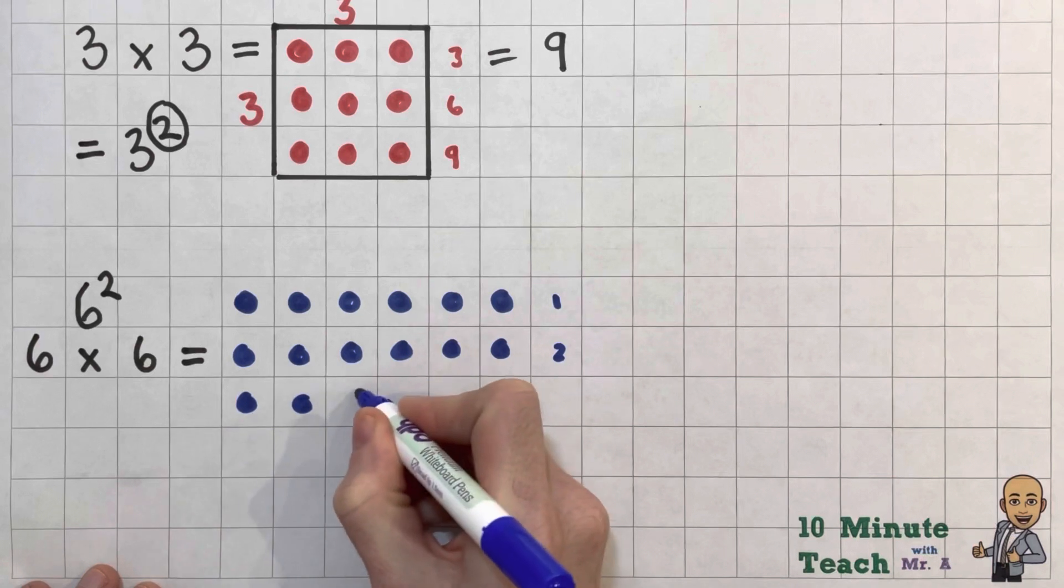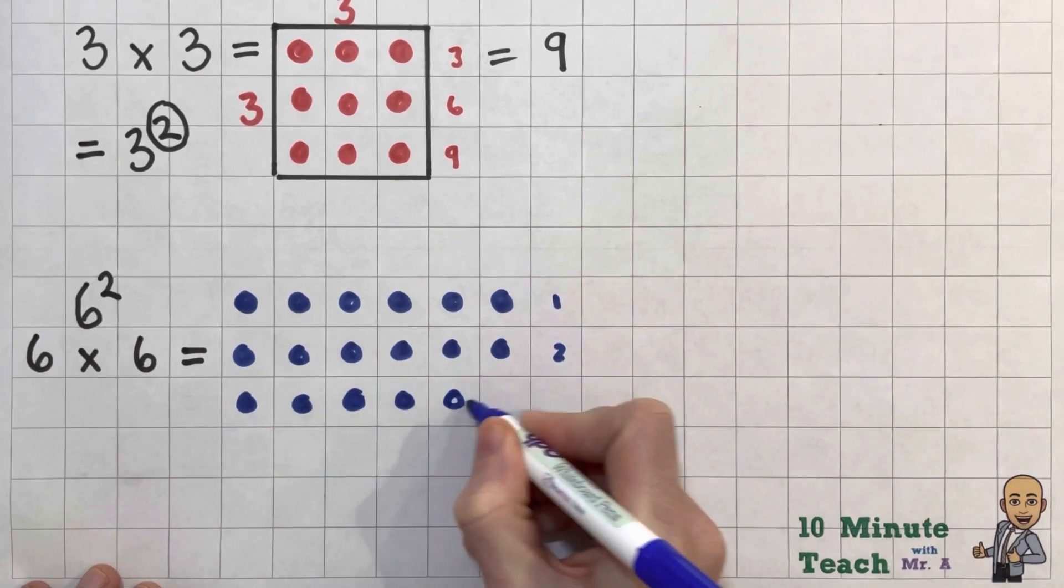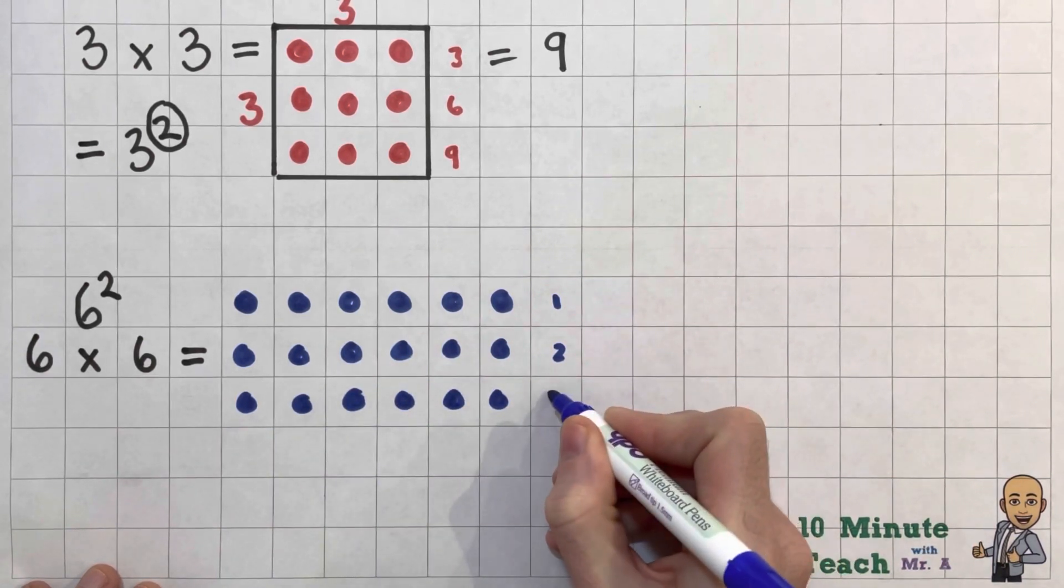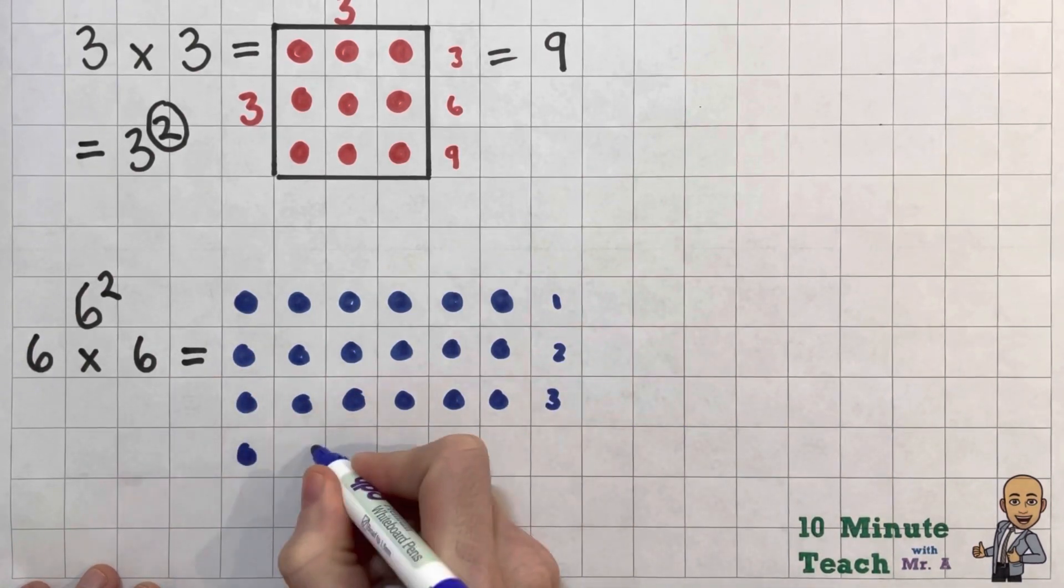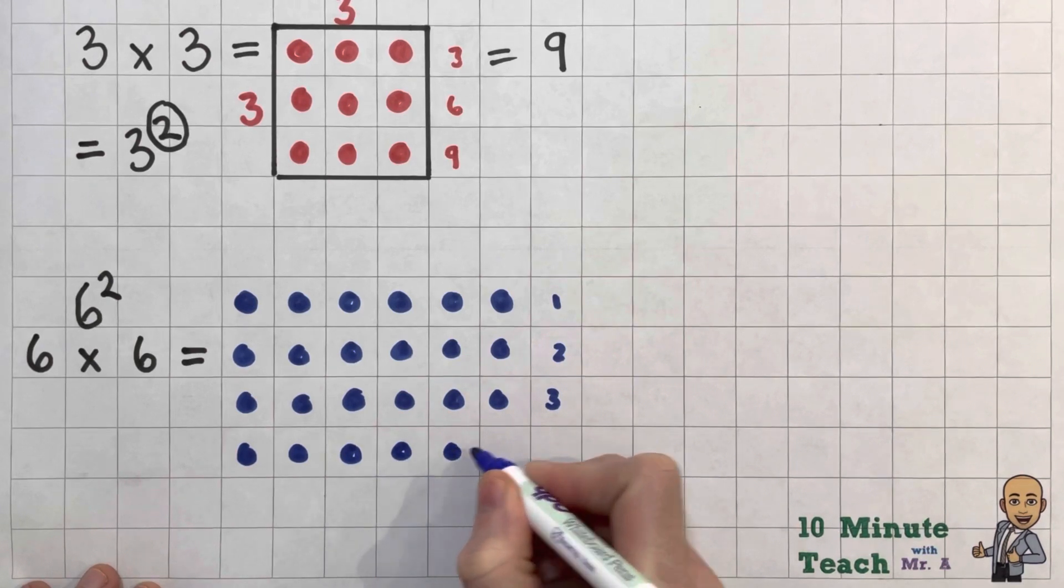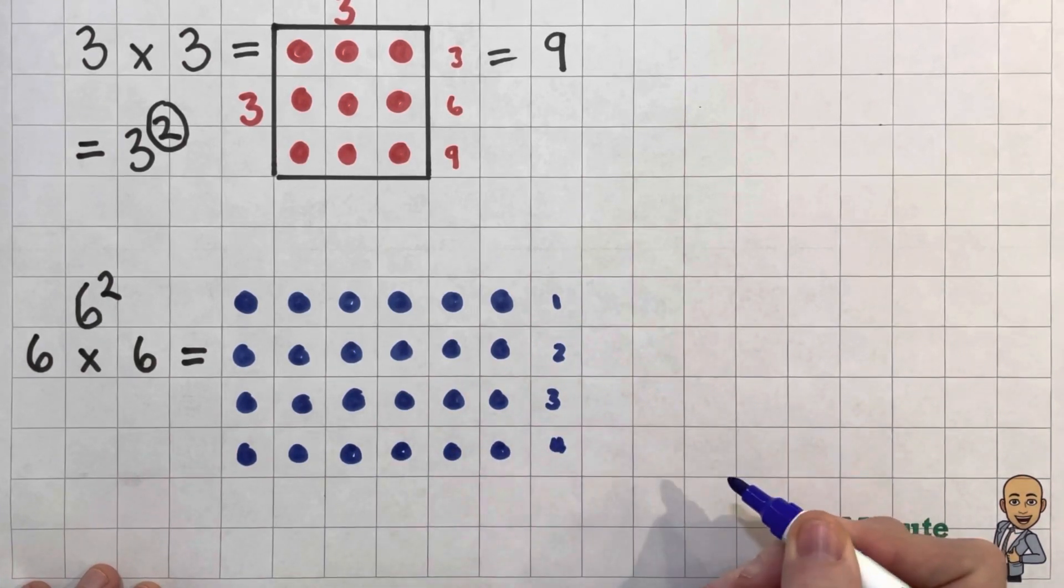1, 2, 3, 4, 5, 6. There's 3 lots of 6, if I was doing 3 times 6. 1, 2, 3, 4, 5, 6. There's 4 lots of 6.